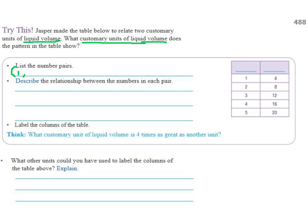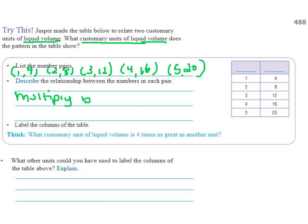First, list the number pairs. That's already there for us. One and four, two and eight, three and twelve, four and sixteen, and five and twenty. And then describe the relationship. Looks like we're multiplying, multiply by four. So something's four times bigger than something else. So if I go back and I look at my customary unit of liquid volume conversion chart, or if I can remember this in my head, something that's four times greater than another unit, it was gallons is four times bigger than quarts.